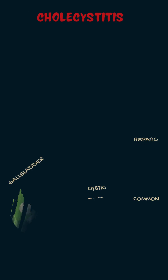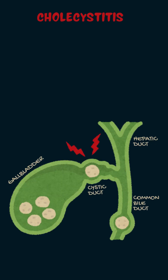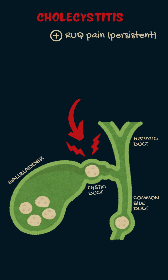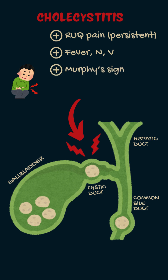Cholecystitis refers to the inflammation of the gallbladder, caused by a gallstone blocking the cystic duct. Unlike biliary colic, this causes severe, persistent right upper quadrant pain, nausea, vomiting, and a fever. On examination, the patient has right upper quadrant tenderness, also known as a Murphy's positive sign, and they have a leukocytosis.